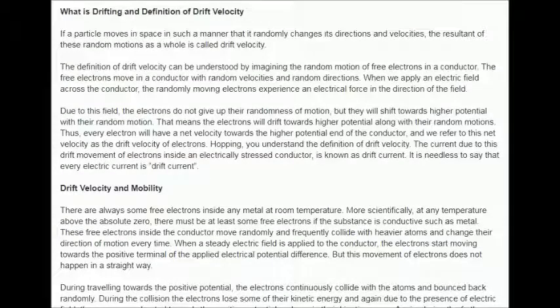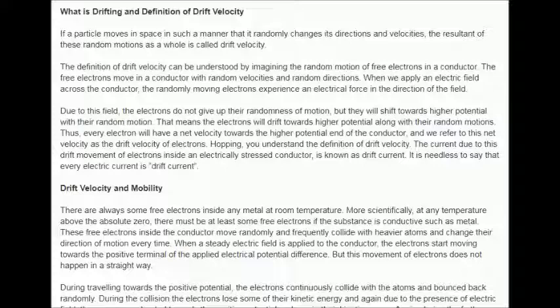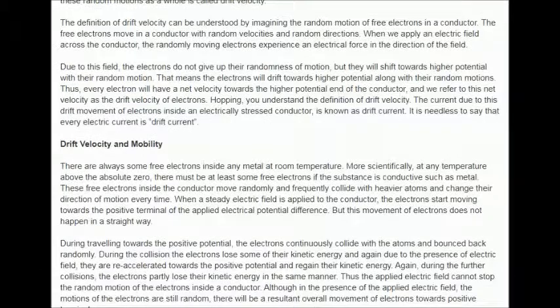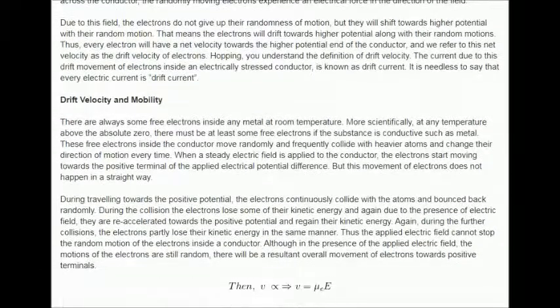These free electrons inside the conductor move randomly and frequently collide with heavier atoms and change their direction of motion every time. When a steady electric field is applied to the conductor, the electrons start moving towards the positive terminal of the applied electrical potential difference. But this movement of electrons does not happen in a straight way.